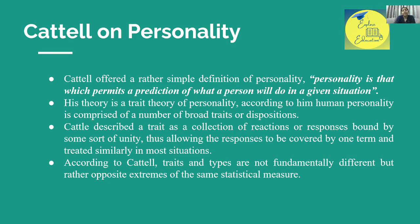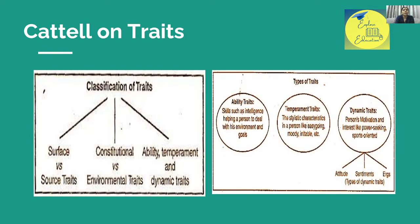According to Cattell, traits and types are not fundamentally different; rather, they represent opposite extremes of the same statistical measure. Regarding the classification of traits, Cattell classified traits as: surface versus source traits, constitutional versus environmental traits, and ability, temperament, and dynamic traits. The source traits are what we mainly discuss in personality questionnaires as factors.